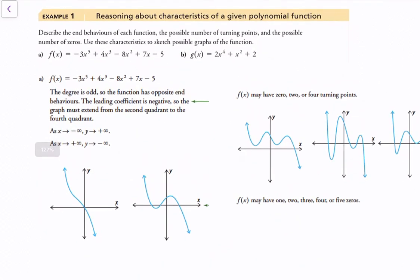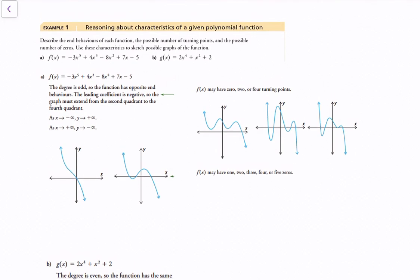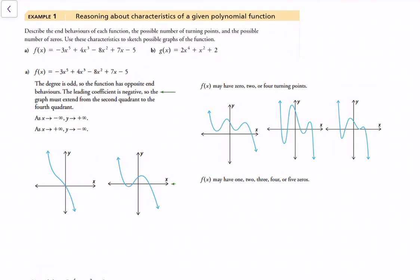Now let's look at some examples. Describe the end behaviors, possible number of turning points, and possible number of zeros of each function. For part a, the degree is odd because of the first term, so it has opposite end behaviors. The leading coefficient is negative, so it starts in the second quadrant and goes to the fourth quadrant. It may have 0, 2, or 4 turning points — since we haven't plotted exact values, we're approximating.